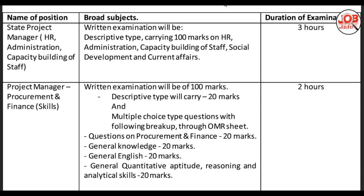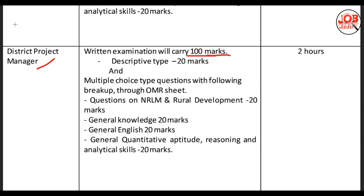First, I am going to cover the District Project Manager syllabus. The exam is 100 marks. Teaching material is 20 marks, grammar is 20 marks — these are multiple choice questions (MCQ). Descriptive data is 20 marks. NRLM and Rural Development is 20 marks. General Knowledge GK is about 20 marks. General English is 20 marks. General Quantitative Aptitude, Reasoning and Analytical Skill is about 20 marks. That was the District Project Manager syllabus.